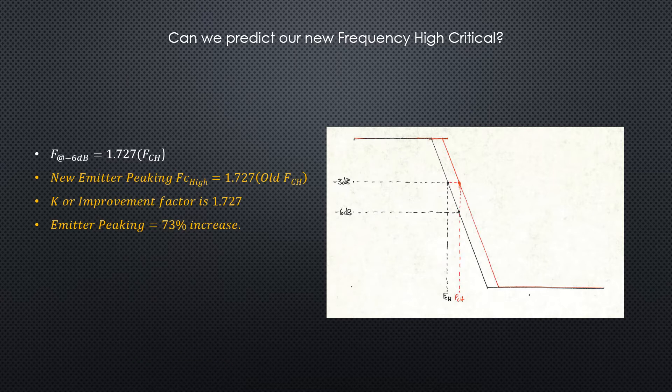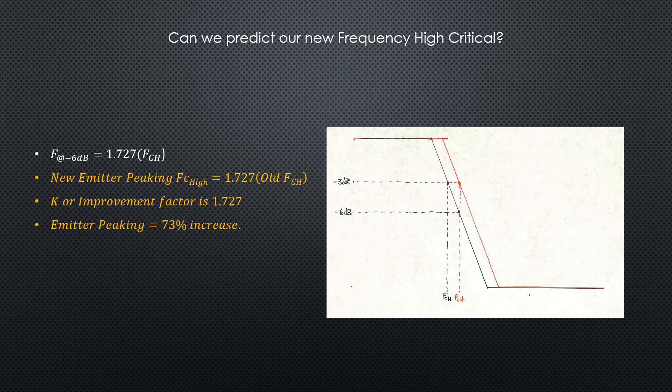Okay, so because everything shifted up 3 dB with the emitter peaking capacitor, we can now say that our new fc high with the emitter peaking capacitor should be pretty close to 1.727 times the old cutoff frequency.